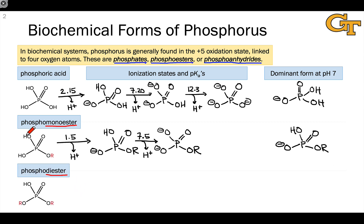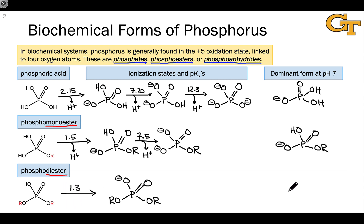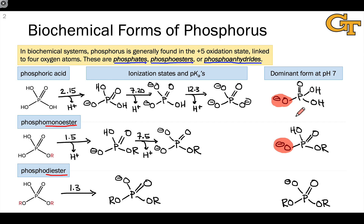In the phosphodiester, two of the hydroxyl groups are replaced with alkoxy groups. Phosphodiesters have only one alternative ionization state, with the remaining hydroxyl proton removed to give an overall charge of negative one. The pKa of a phosphodiester is quite low, about 1.3, so at pH 7 the dominant ionization state is the monoanionic form. An important lesson is that phosphorus in biochemical systems tends to be associated with negative charge on its attached oxygens, and we can expect substantial negative charge on phosphate, phosphomonoesters, and phosphodiesters at physiological pH.